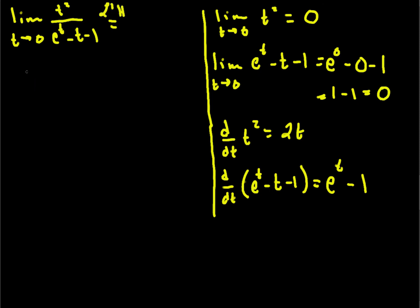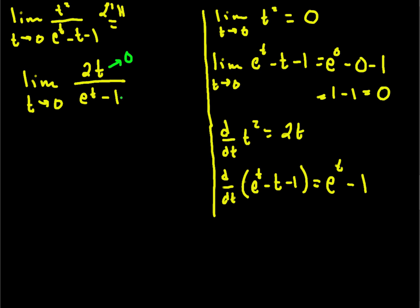So according to L'Hôpital's rule, this is equal to the limit as t approaches 0 of 2t divided by e to the t minus 1. But we're still in a pickle, because as t goes to 0 the top approaches 0, and so does the bottom — since e to the 0 is 1, the denominator goes to 1 minus 1, which is 0. So we're still in an indeterminate form.